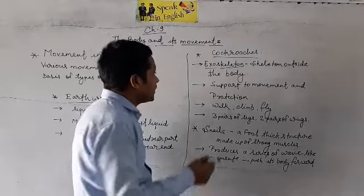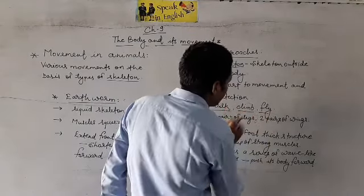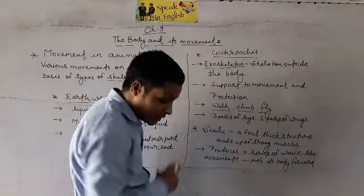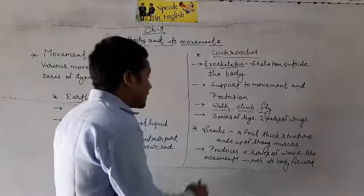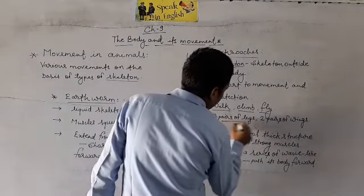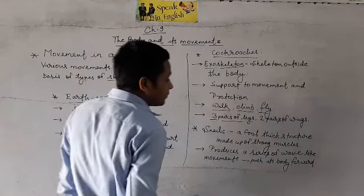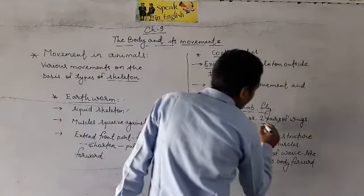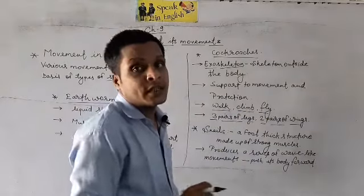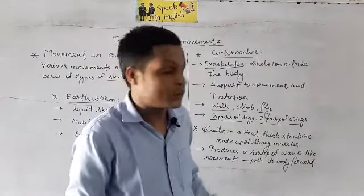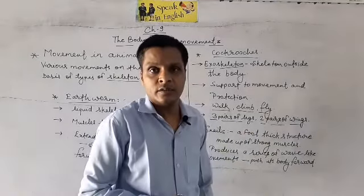A cockroach can walk, climb, and fly. They have three pairs of legs which help them walk and climb, and two pairs of wings which are attached to their breast bones, which help them fly.